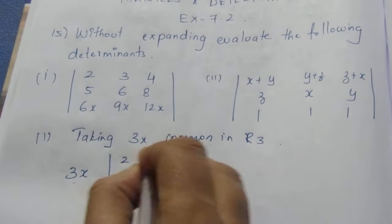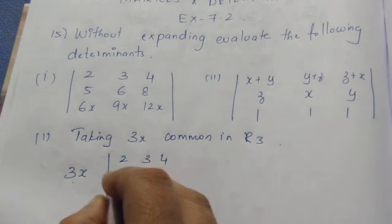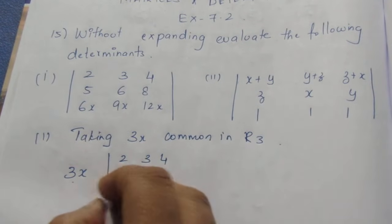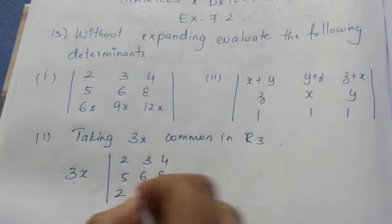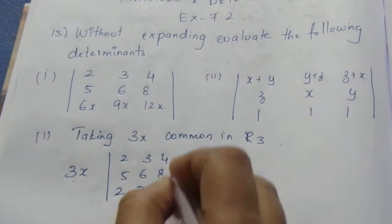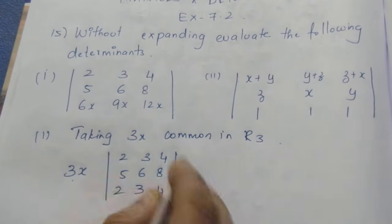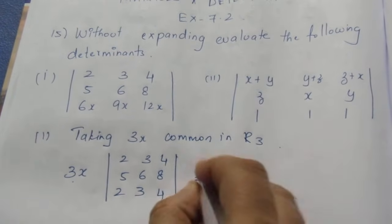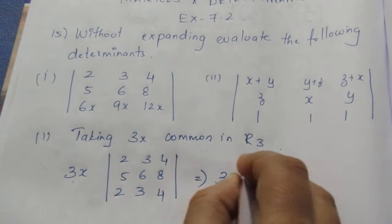After taking 3x common from row 3, the matrix becomes: row 1: 2, 3, 4; row 2: 5, 6, 8; row 3: 2's are 6, 3's are 9, 4's are 12. Now let's see what value this gives — it is 3x times the determinant.